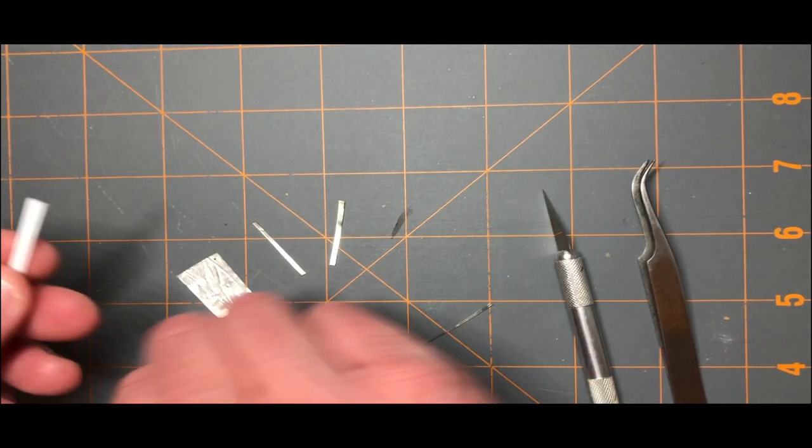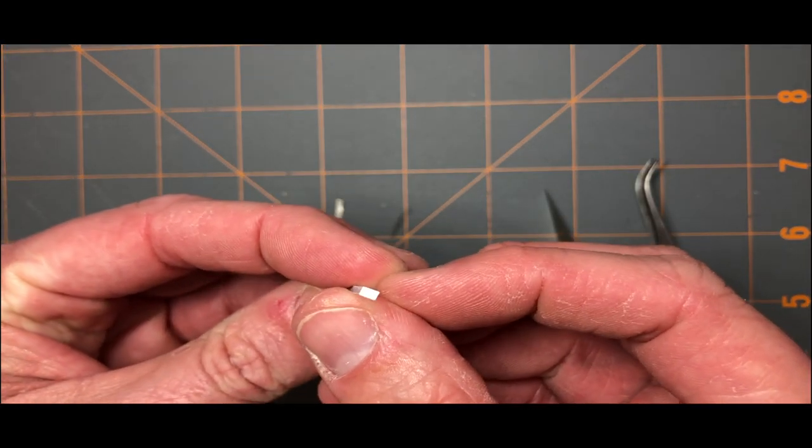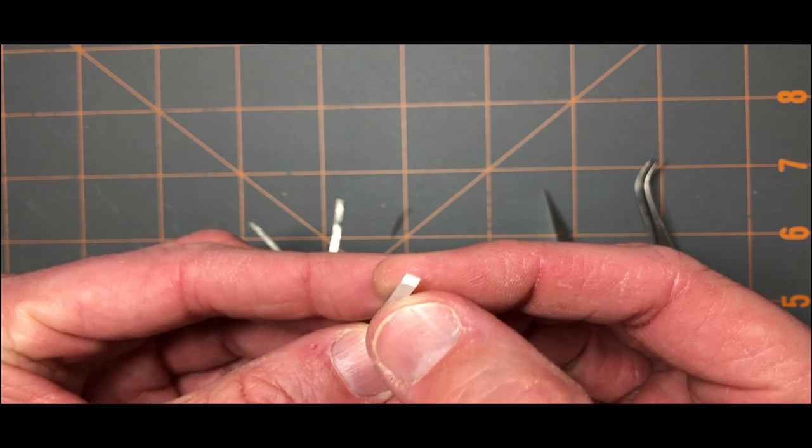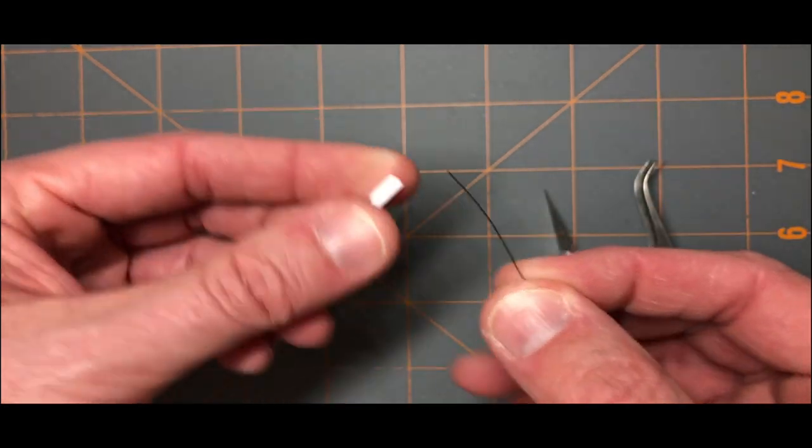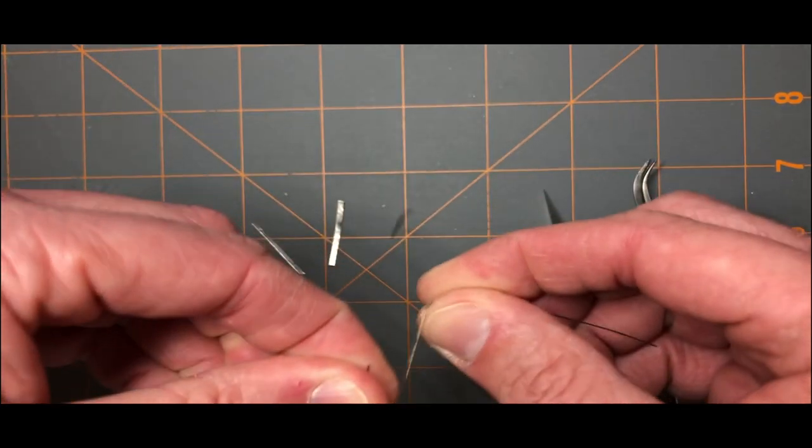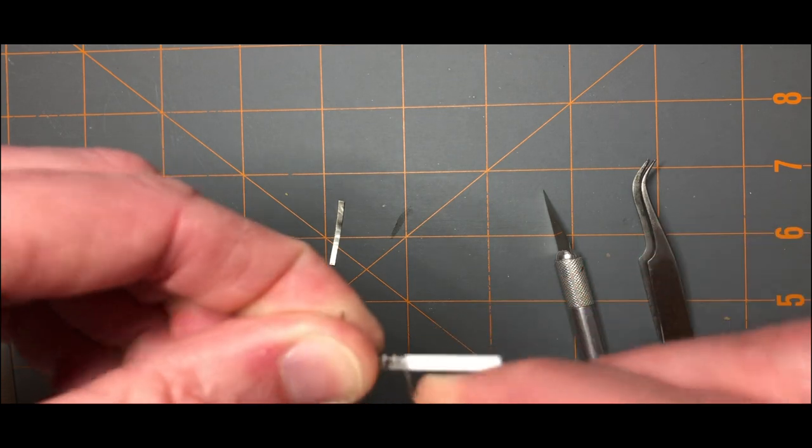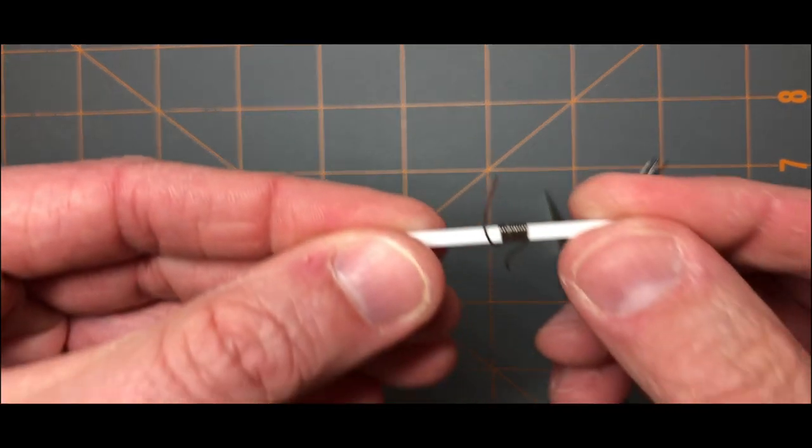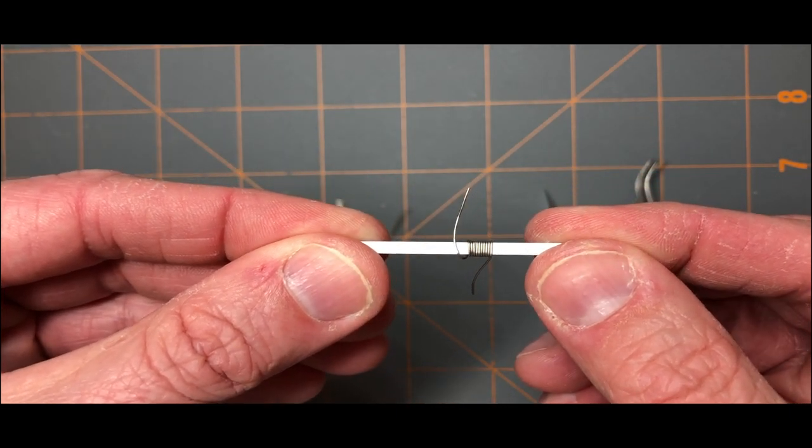To make the buckles what I do is I take a small piece of styrene square rod and you can sand it down or cut it down to whatever dimension you want. I'll just leave this the dimension that it was. Just for demonstration purposes take this solder and basically wrap it multiple times around almost like you're going to make a spring. So you wrap it to get around the rod. I like to compress it kind of flat and that's kind of what it looks like.